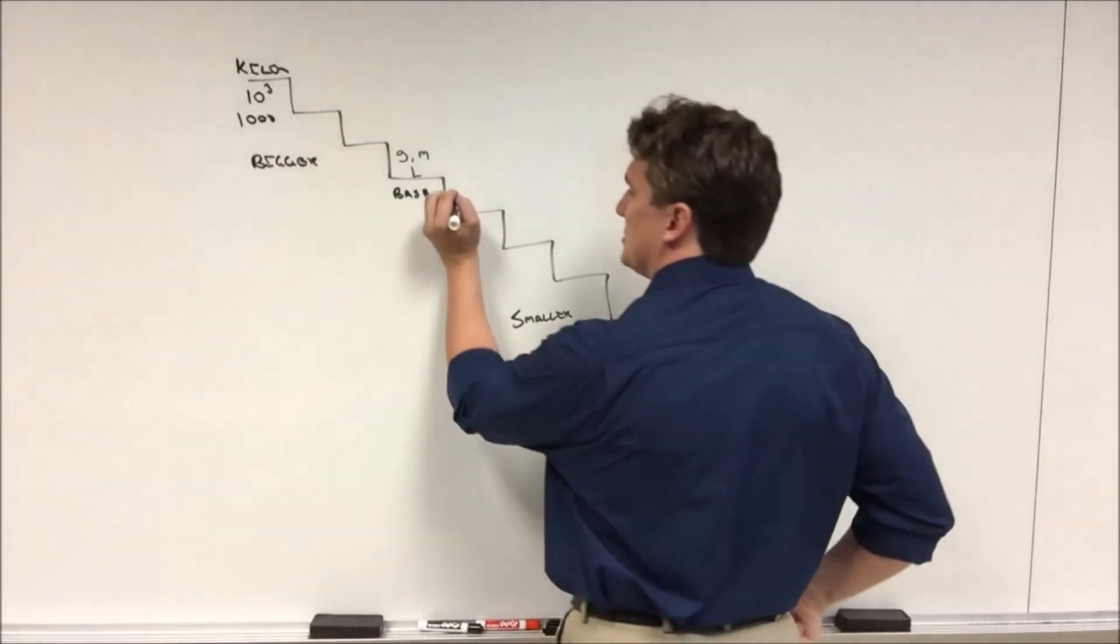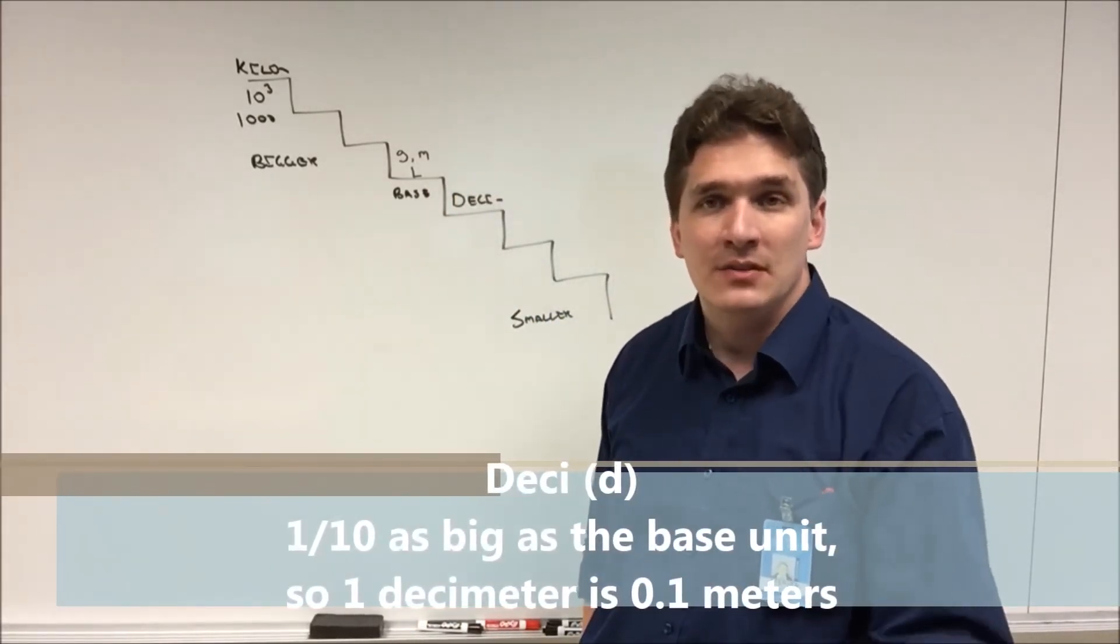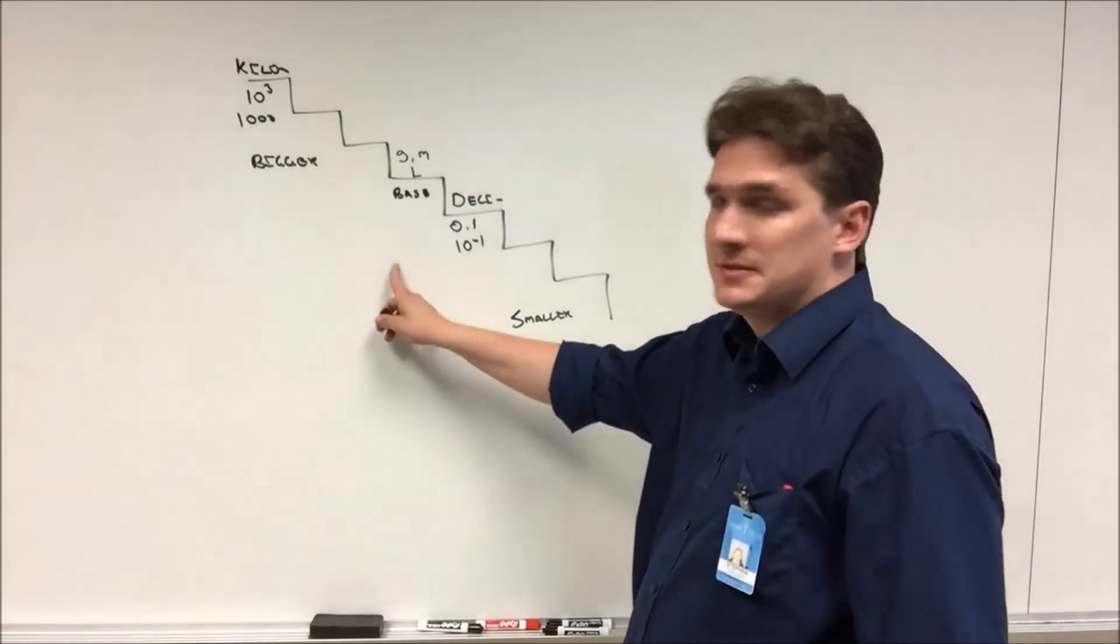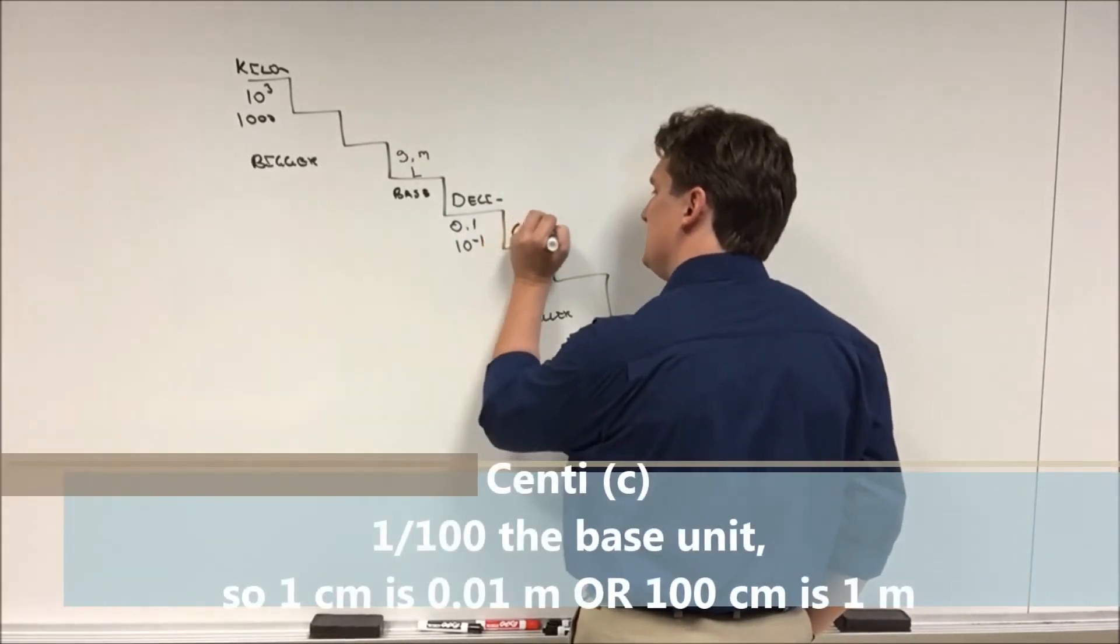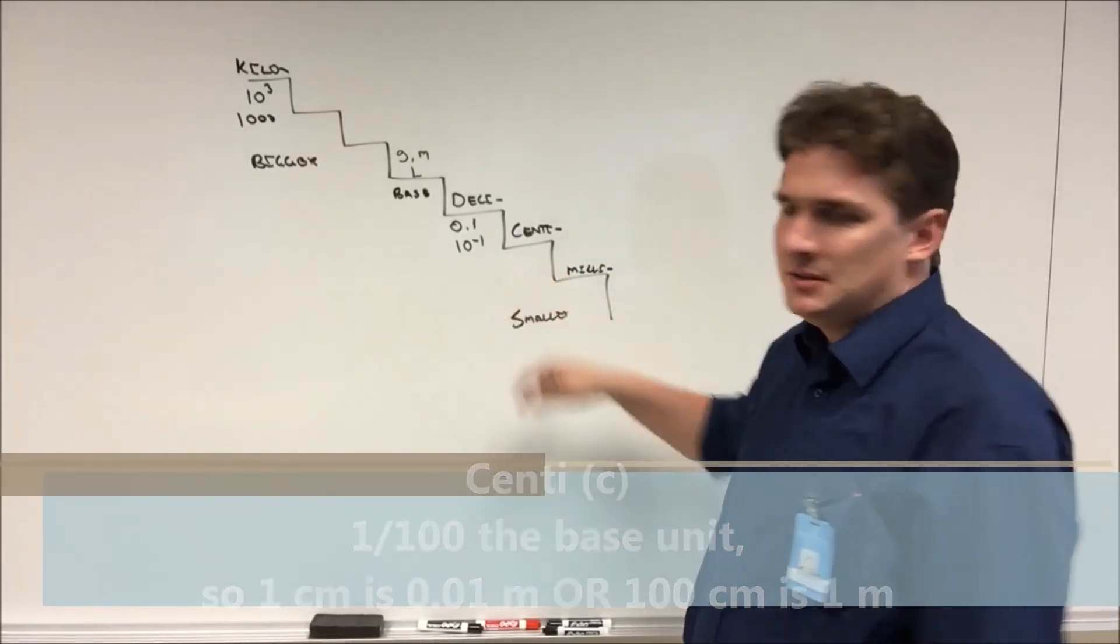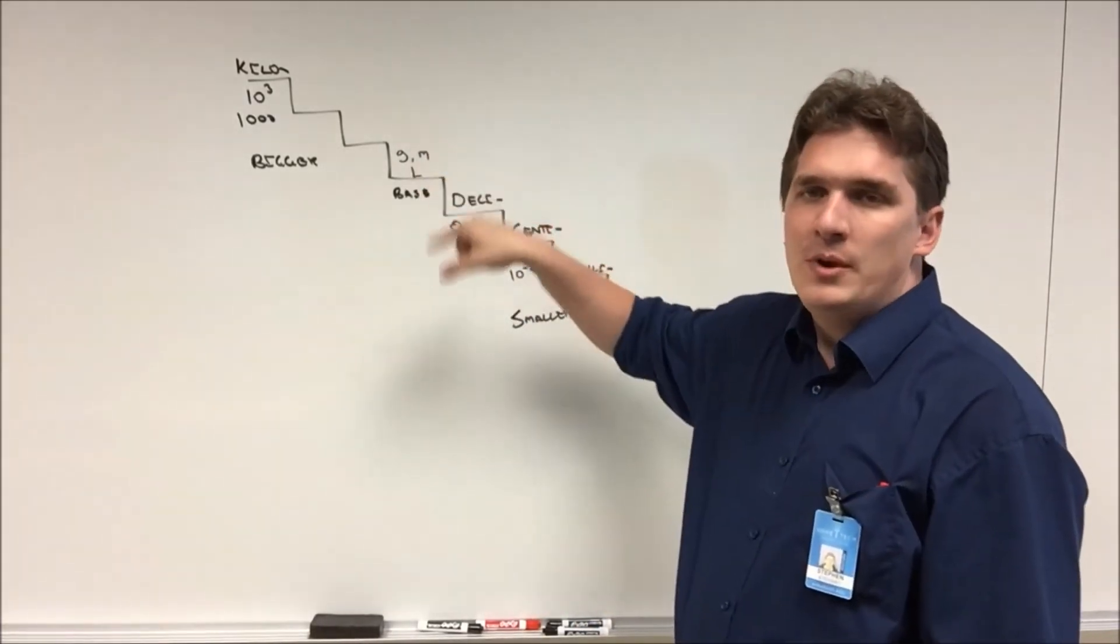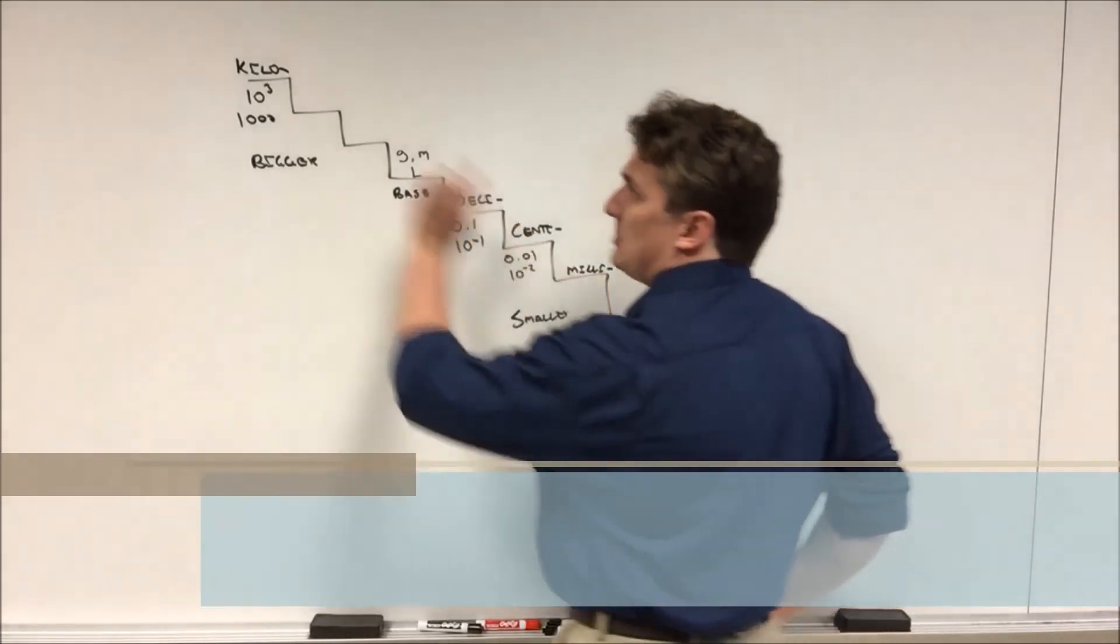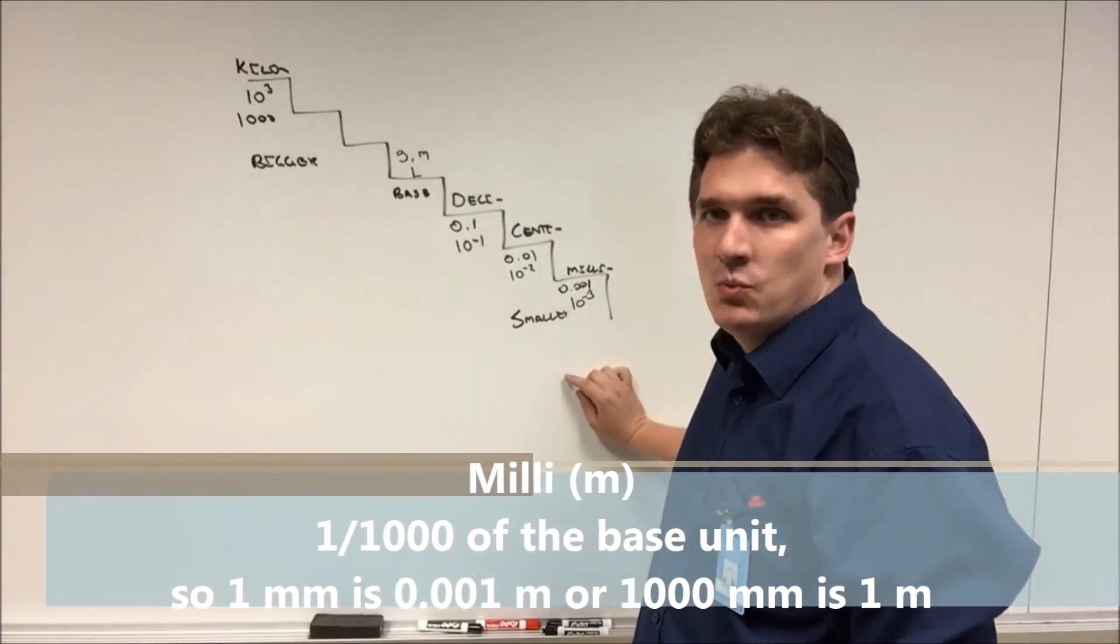Now we can step down as well. So we have the prefix deci here. So deci is one-tenth. You've probably heard about a decibel. That's one-tenth of a bell. This is 0.1 or 10 to the negative one times as large as whatever the base unit is. So for every meter we have 10 decimeters. Now the units you're probably more familiar with: the centi and the milli. So a centimeter is 0.01 or 10 to the minus two times as big as a meter. So for every meter we have a hundred centimeters and for every centimeter we have 0.01 meters. The milli is the complement to the kilo. So it's 10 to the negative three or 0.001. So one millimeter is one one thousandth of a meter.